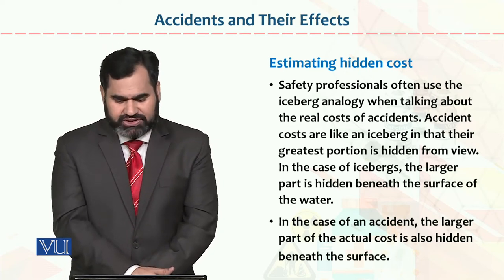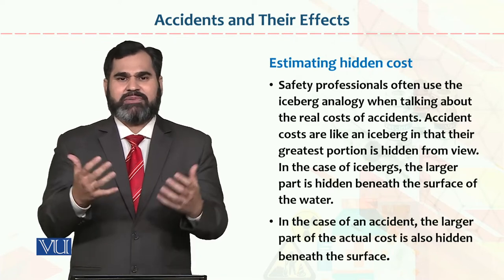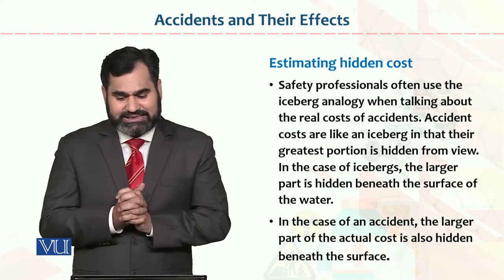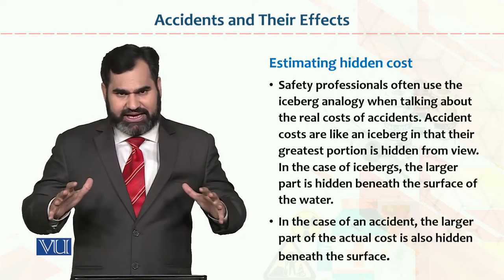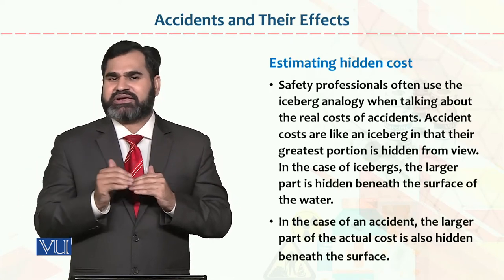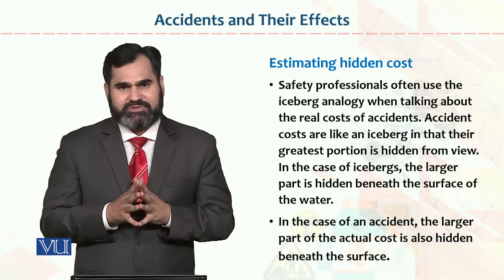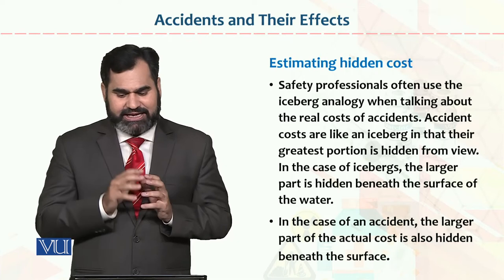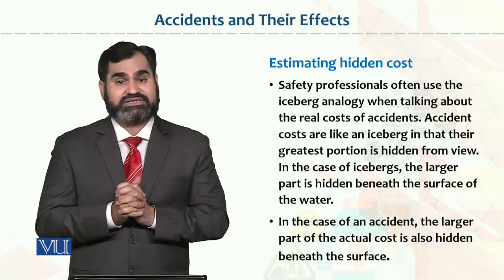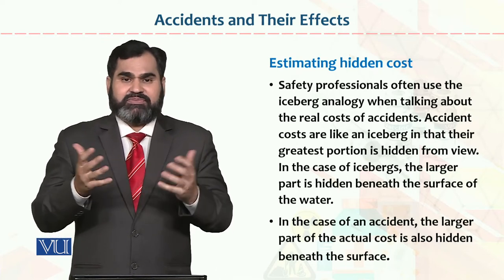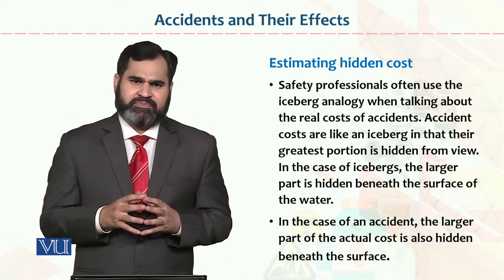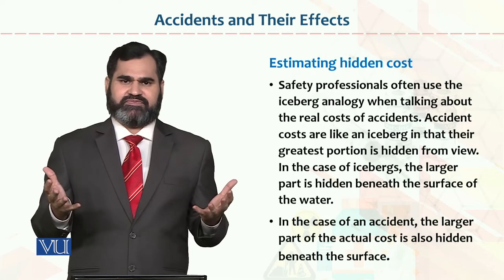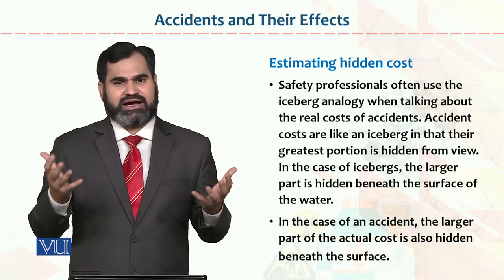Estimating hidden costs: some costs are hidden and not visible on the surface. Safety professionals often use the iceberg analogy — just as part of a glacier is below the ground and part is visible as a tip above, in the case of an accident, the larger part of the actual cost is also hidden beneath the surface. For example, if someone is injured, you may have no idea of the extent of their injury — perhaps they cannot walk for their whole life. This is known as a hidden cost, and estimating such costs is impossible.